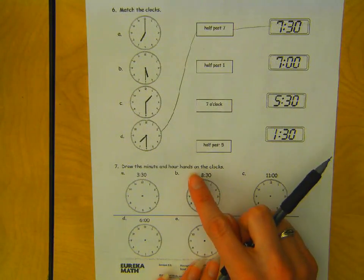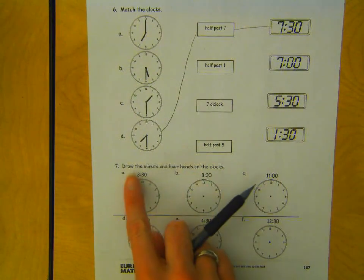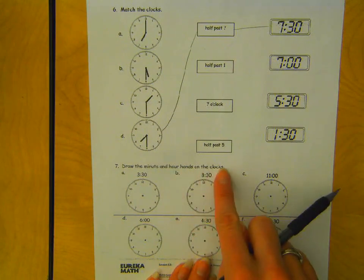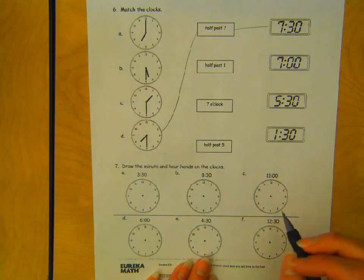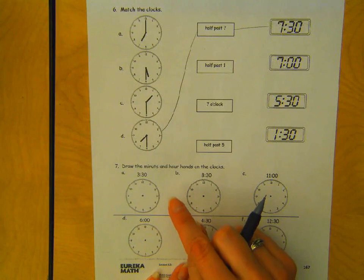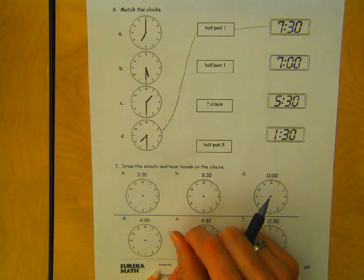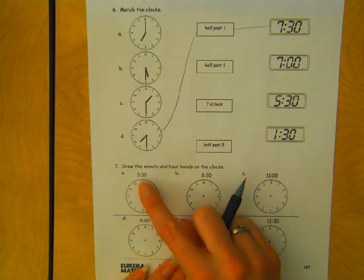It says draw the minute and hour hands on the clocks. So we need to be very mindful of the minute hand and hour hand size. Minute hand is long, hour hand is short. So let's do 3:30.